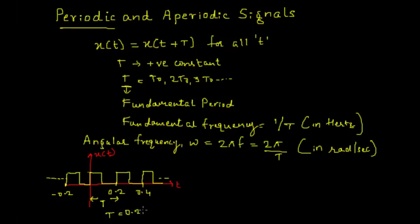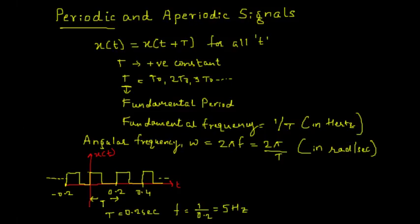The period from 0 to 0.2 is known as the fundamental period, so T equals 0.2 seconds. To calculate the frequency, f equals 1 divided by 0.2, which gives 5 hertz. The fundamental period represents the duration of one complete cycle, which is 0.2 seconds in this case, and the frequency of 5 hertz tells how frequently the signal repeats itself. These kinds of signals are known as periodic signals.